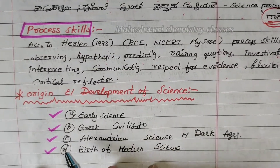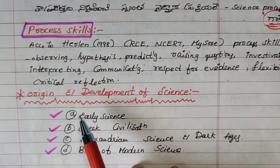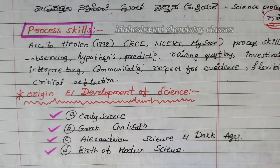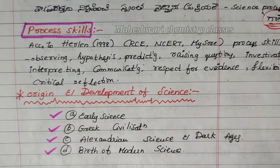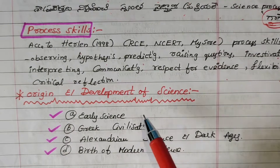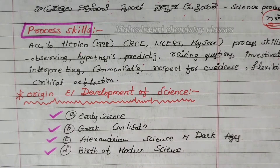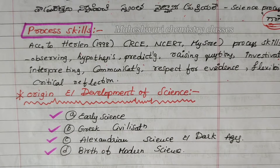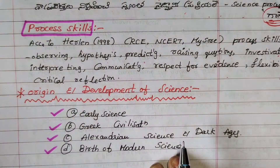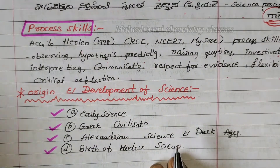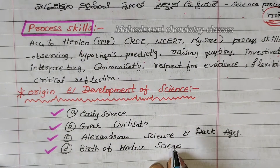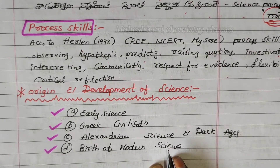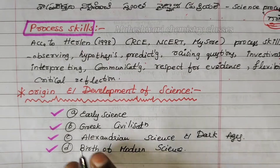Welcome to Maheshwari Chemistry Classes. This is the topic of Origin and Development of Science, the first chapter of the physical science methodology, and this is the third topic. We have uploaded classes in this sequence. Please, friends, subscribe to Maheshwari Chemistry Classes, share with your friends, and please support us. It is my request. So, let's look.